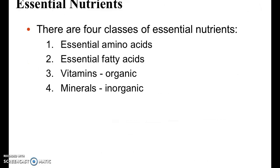There are basically four classes of essential nutrients. The first are essential amino acids. There are a total of 20 amino acids — amino acids are the building blocks of proteins. Nine of them are considered essential, meaning your body cannot make them and you have to consume them from outside.